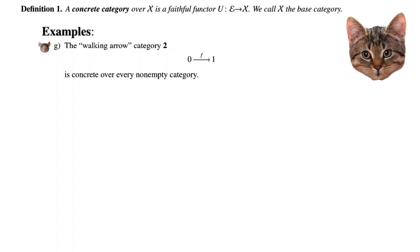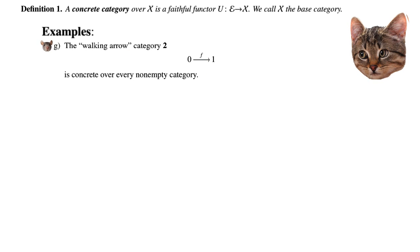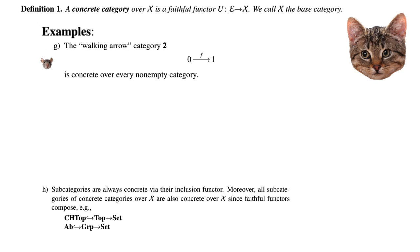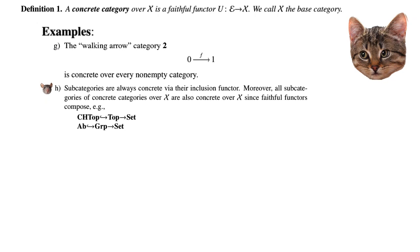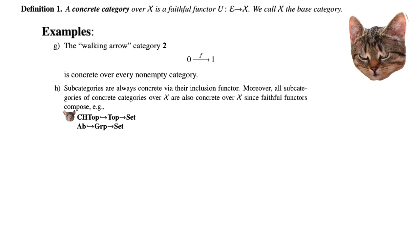The walking arrow category, which consists of two distinct objects and one non-identity arrow between them, is concrete over every non-empty category — you can freely choose any arrow in the codomain category as long as it's not the empty category. Subcategories are always concrete via the inclusion functor; moreover, all subcategories of concrete categories over x are also concrete over x, since faithful functors compose. For example, the category of compact Hausdorff topological spaces is a subcategory of topological spaces and is concrete over Set, as is the category of abelian groups as a subcategory of groups.